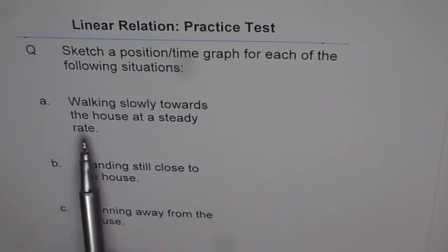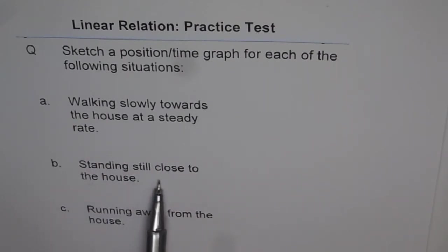A: Walking slowly towards the house at a steady rate. B: Standing still close to the house. C: Running away from the house. I need you to sketch position-time graphs for all three situations.